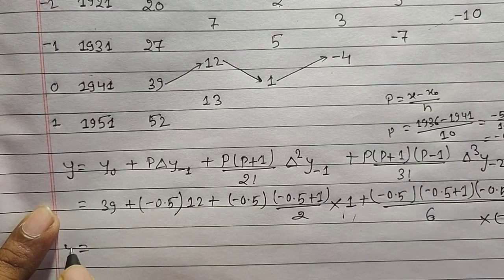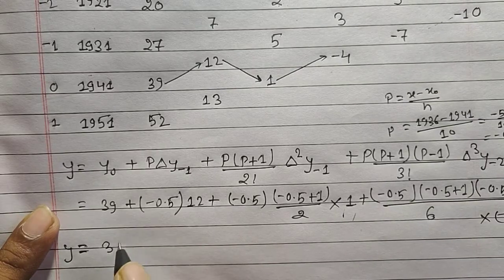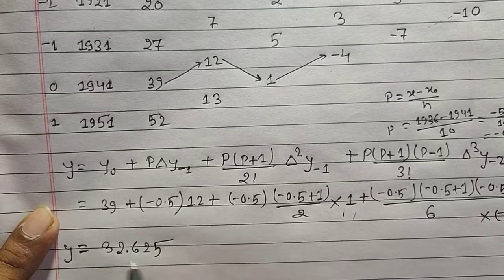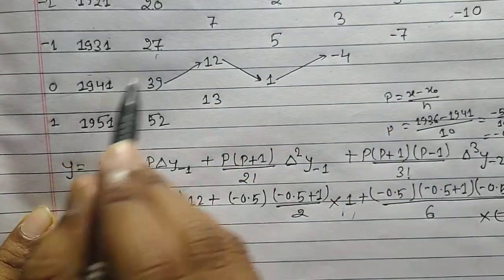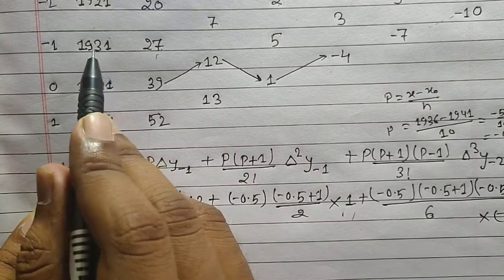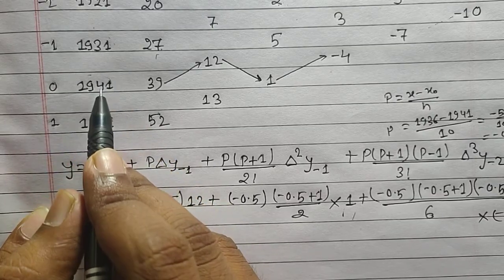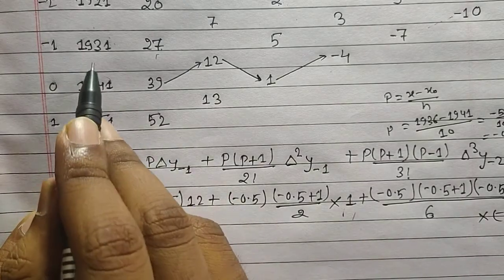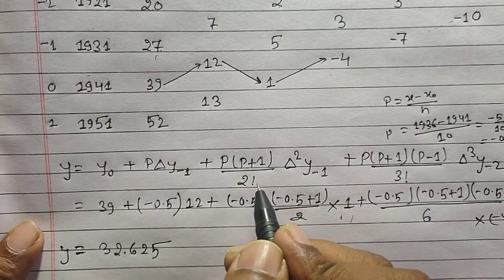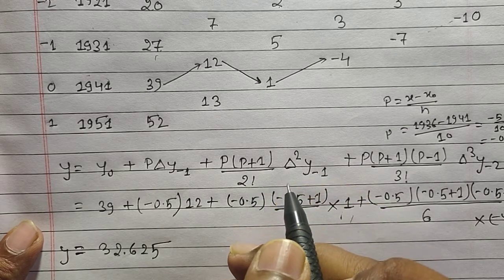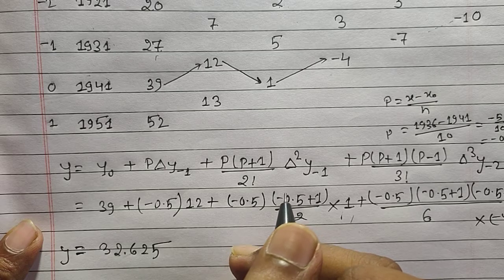After solving this using a calculator we get y = 32.625. As you can see, 32.625 lies between 27 and 39, and 1936 lies between 1931 and 1941 — this is what interpolation gives us. I hope this video was helpful. Thanks for watching. If you found it helpful, do like and share. For more civil engineering videos, let me know in the comment section and subscribe to my channel. Thank you.